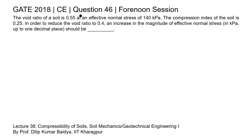This is question 46 of the civil engineering paper of GATE 2018 forenoon session. The void ratio of a soil is 0.55 at an effective normal stress of 140 kilopascal. The compression index of the soil is 0.25. In order to reduce the void ratio to 0.4, an increase in the magnitude of effective normal stress should be determined.